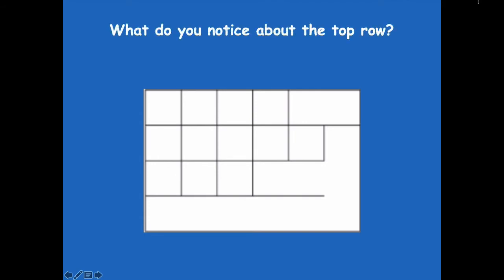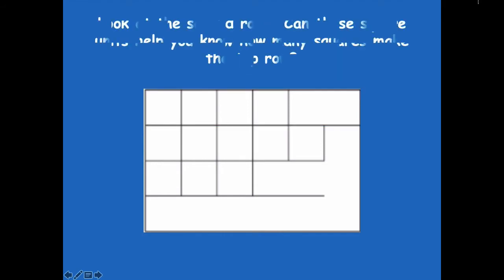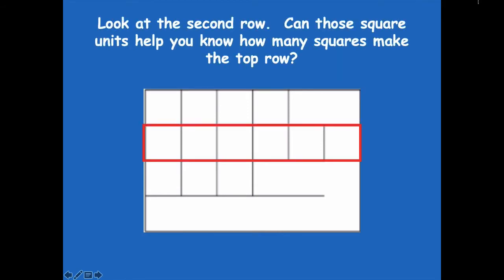What do you notice about the top row? It's pretty close to being complete, right? But it's just missing that last line. Let's look at our second row. Can those square units help you to know how many square units make the top row?